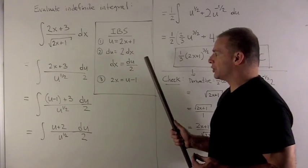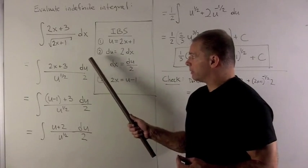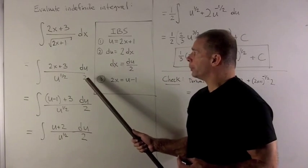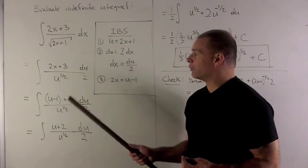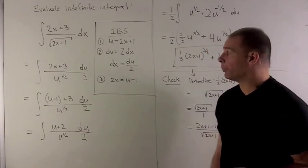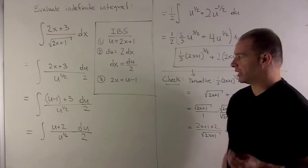We move all of these into our formula. dx becomes du over 2. Square root of 2x plus 1 becomes u to the 1 half. We might as well get rid of the radical sign now. Then we're left with the 2x plus 3 in the top, which needs to be worked on.